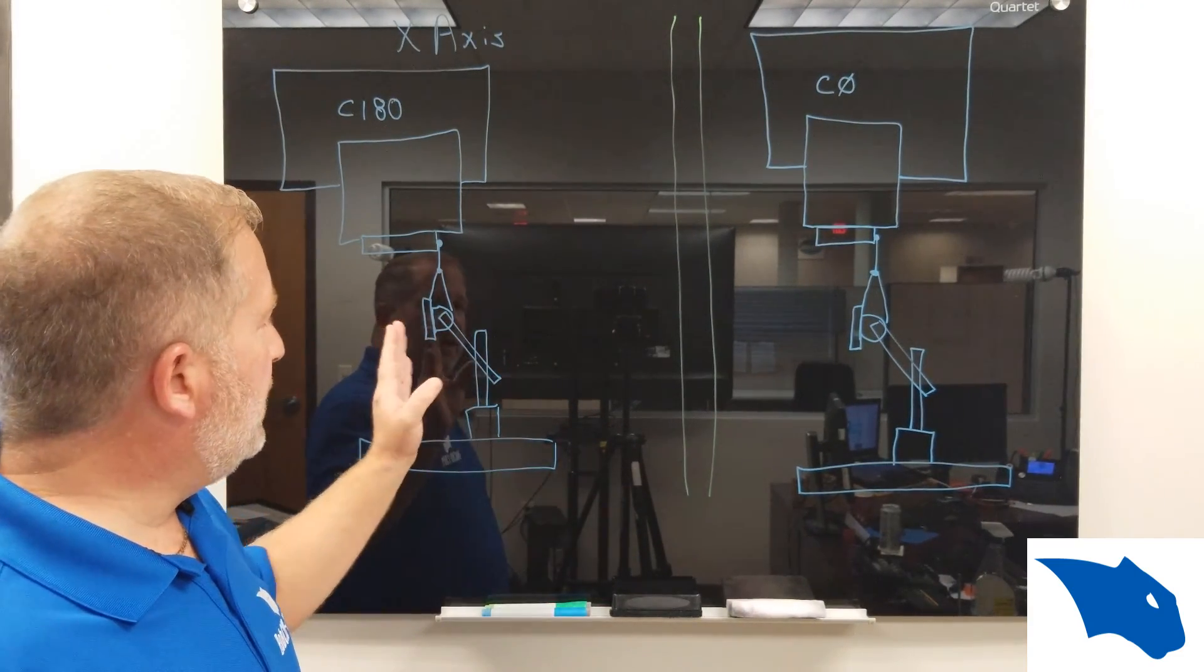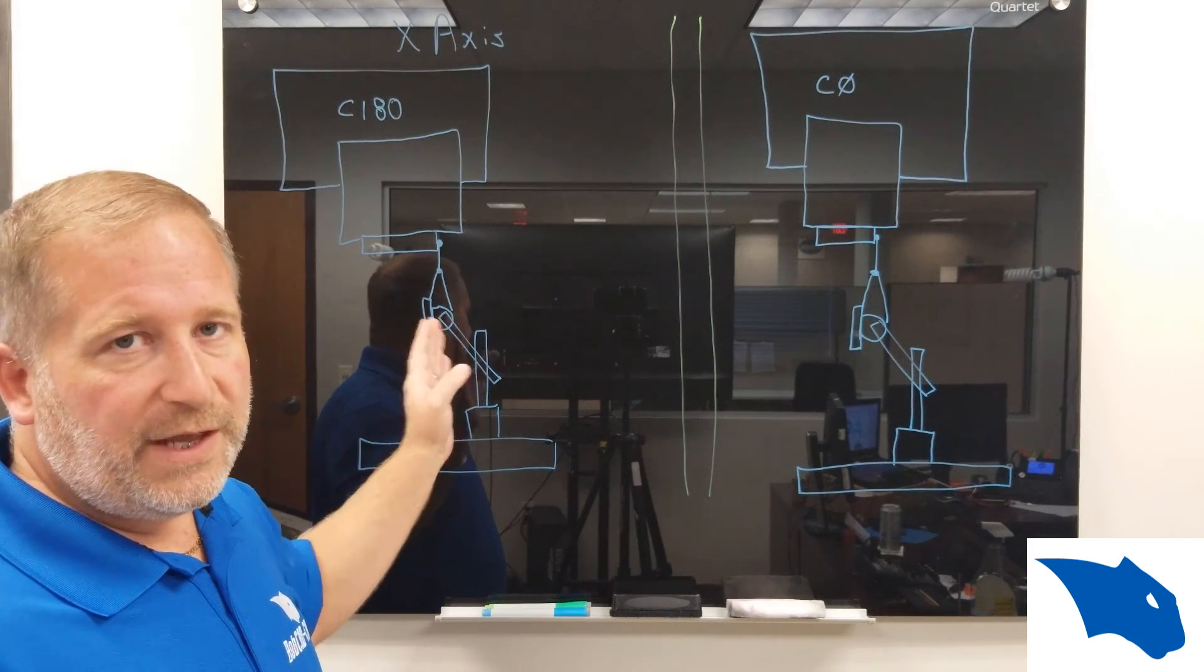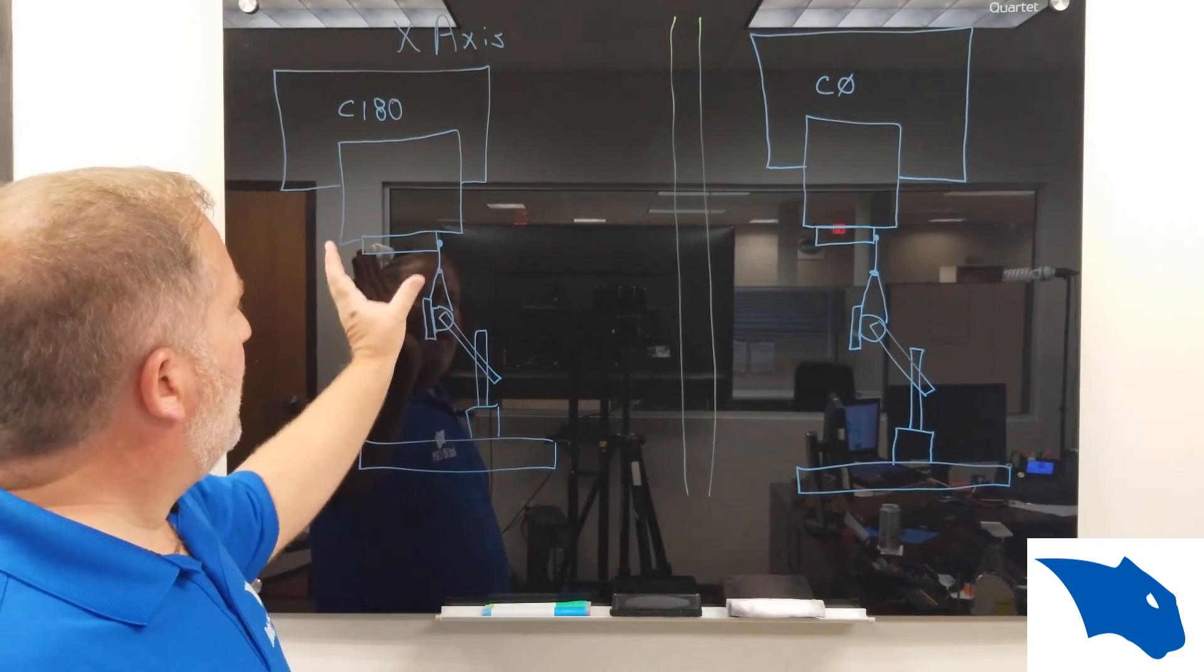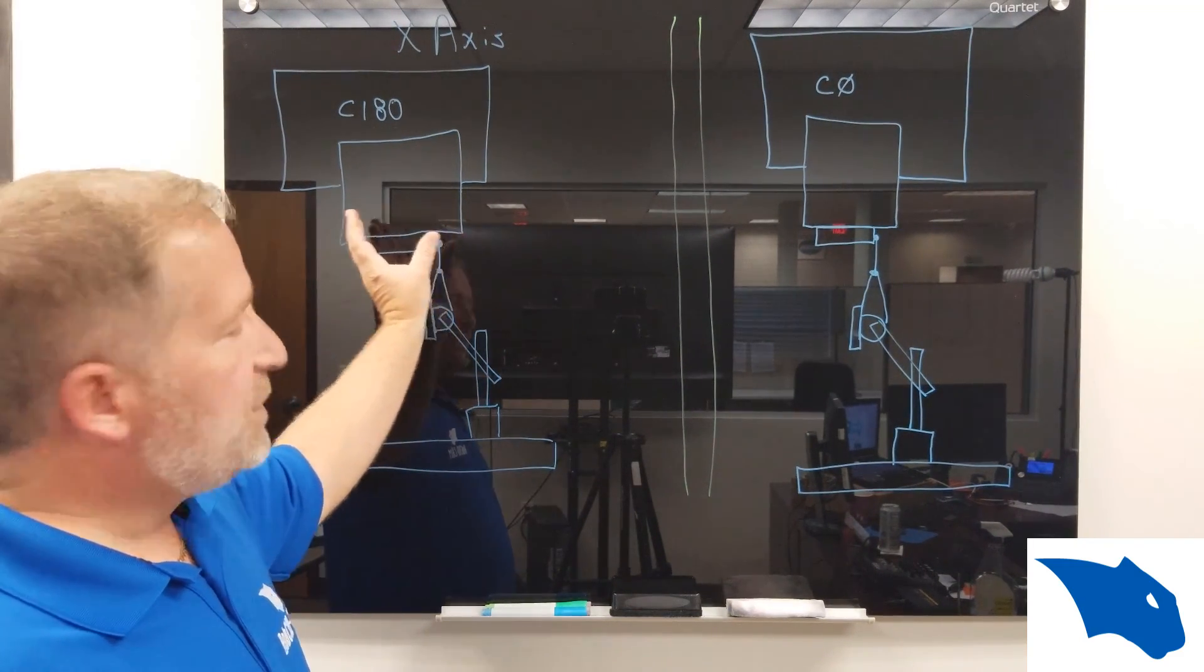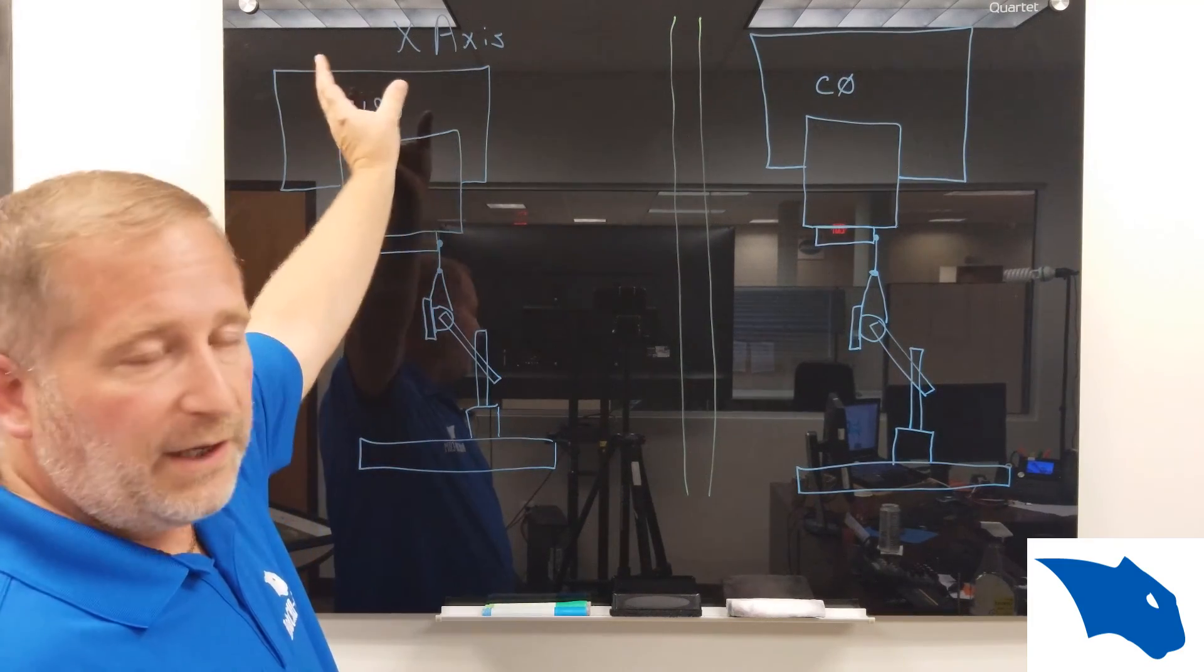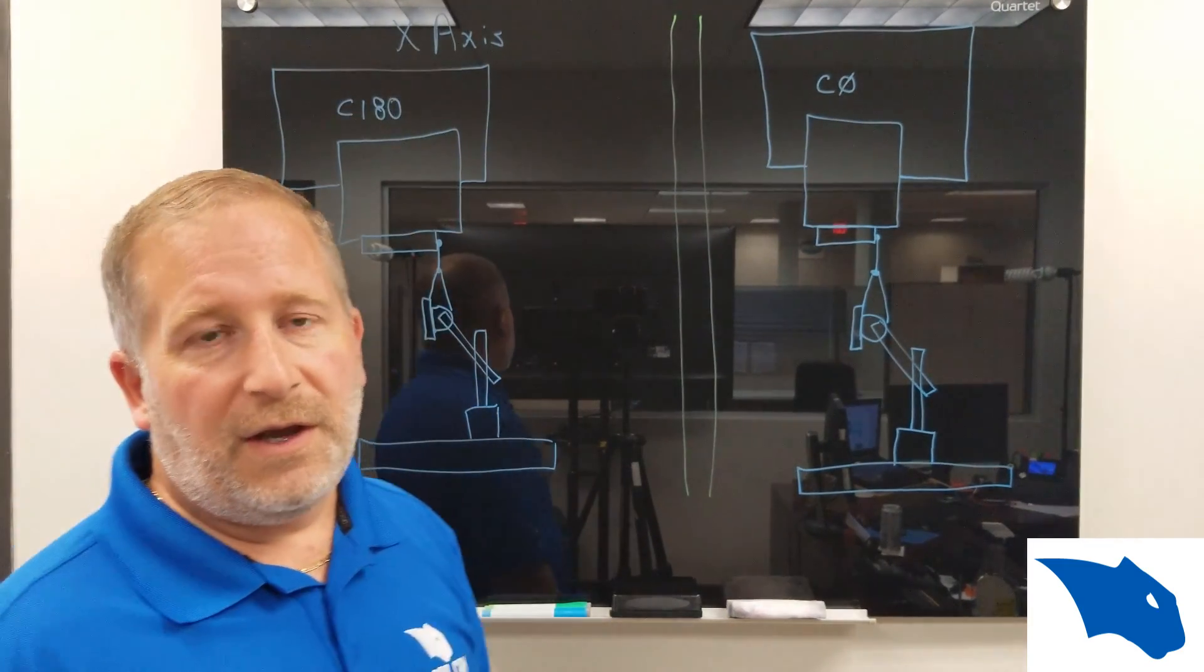If there's a difference in that x position, that needs to be known because that means that the spindle is not perfectly aligned with the rotation axis of your c.